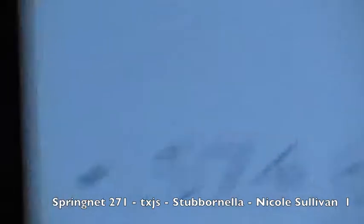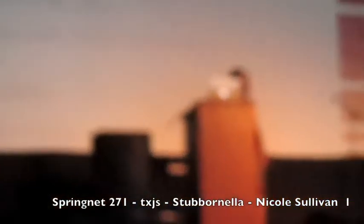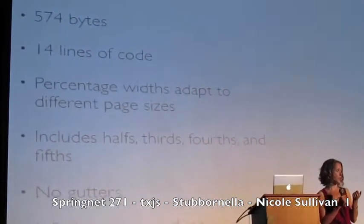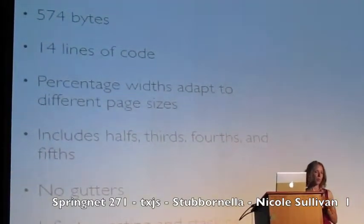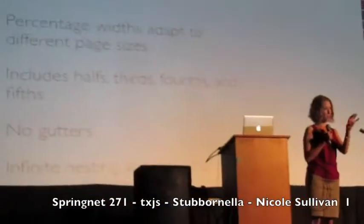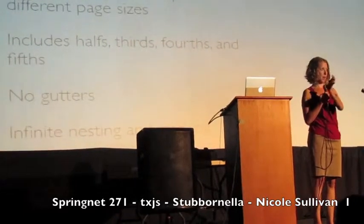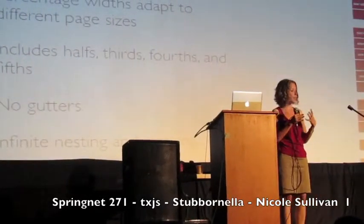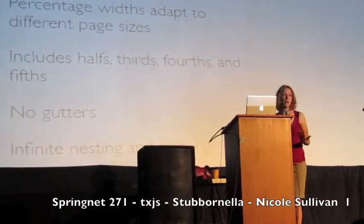Gmail style layout, a Yahoo layout, a bunch of different ones, as well as being really easy to expand to whatever size or number of columns you need. The grids are also tiny, tiny, tiny. About 600 bytes, 14 lines of code. You get all the different divisions between halves, thirds, fourths, and fifths — and they're infinitely nestable and stackable. That's really important, because a grids system that doesn't allow infinite nesting is only solving one level of your problems.